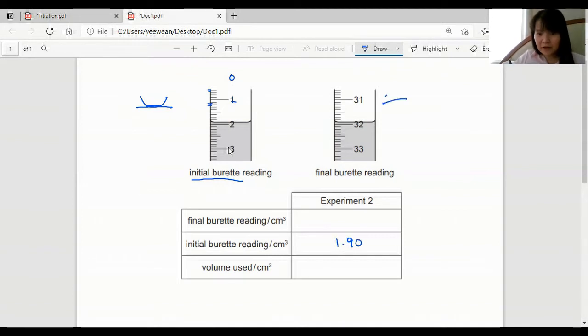And as for the final burette reading, so this is 31, 31.5, 31.9, and the volume used.